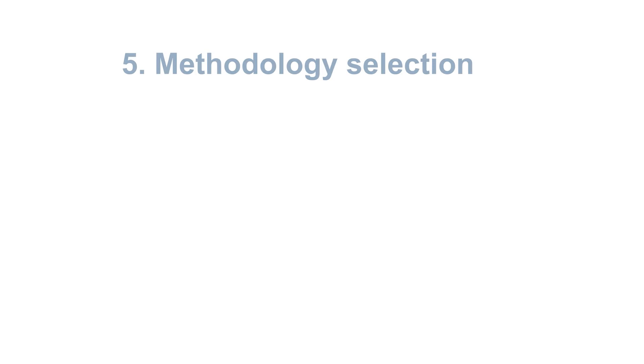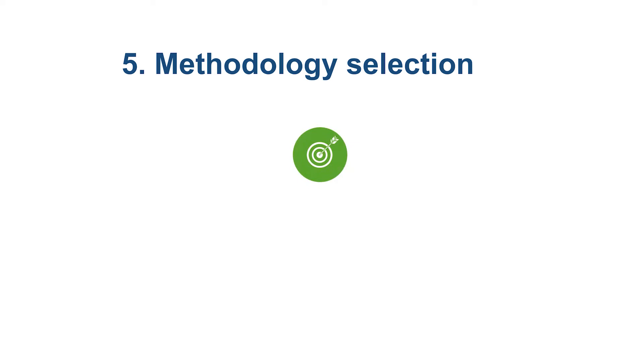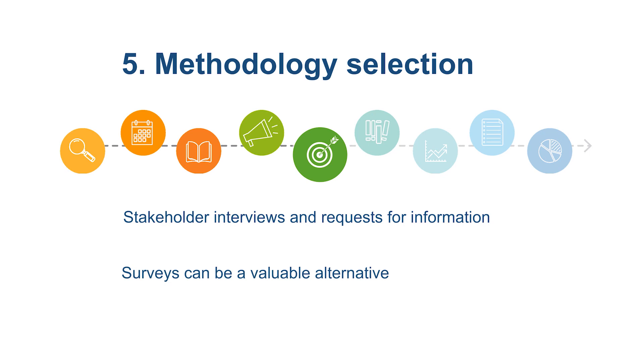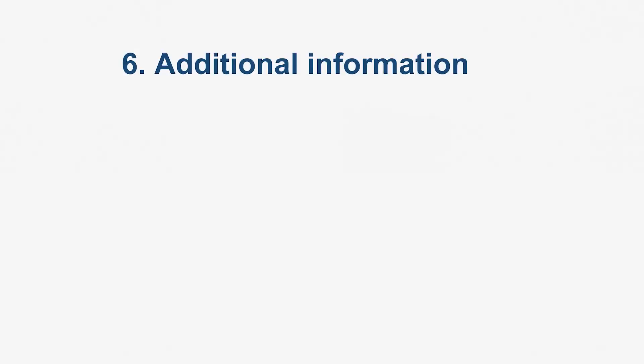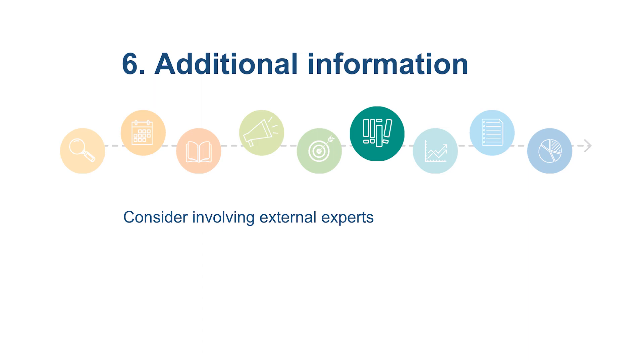The fifth step is the selection of the methodology and ensuring data collection, which is the core of the research. The most used tools for data collection are stakeholder interviews and requests for information. Surveys can be a valuable alternative when consumers are too numerous or heterogeneous. Depending on the outcome of the data collection process, it might be worth gathering additional information, involving external experts, or liaising with sector regulators. At this stage, the data should be ready for analysis.